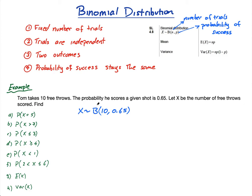Just writing that down will often get you a mark because it shows you understand it's a binomial distribution and you understand the number of trials and the probability. This can all be done with your calculator and it's fairly straightforward once you know where the buttons are. What's the probability that X equals 5 — that he gets exactly 5 out of 10 free throws?